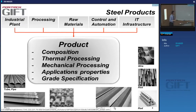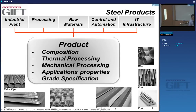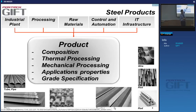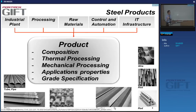A product comes out of a steel plant. This industrial plant processes raw materials using information technology and automation — an IT infrastructure controls the whole flow of materials. As a result of composition and thermal processing, the product has mechanical properties and application properties, all leading to a product with grade specifications. This particular beam has a specification — it's a certain steel, used in a certain application, with a grade specification according to a certain standard.